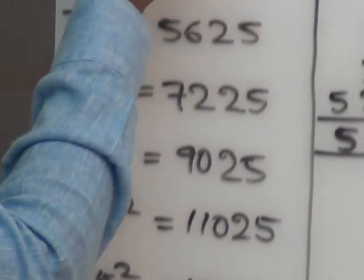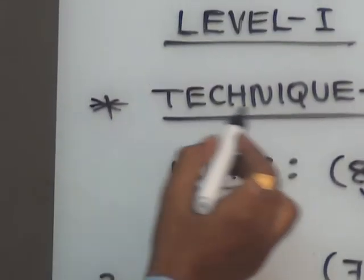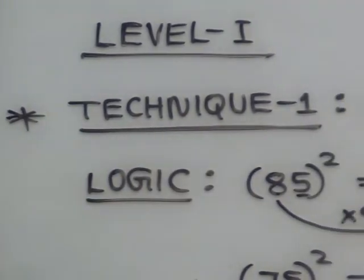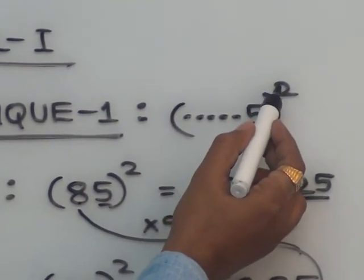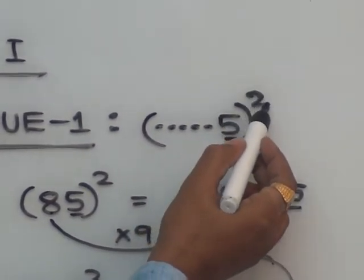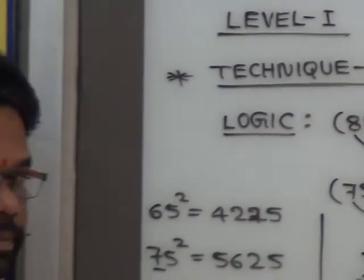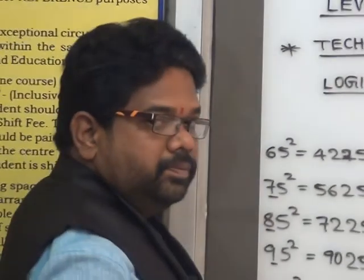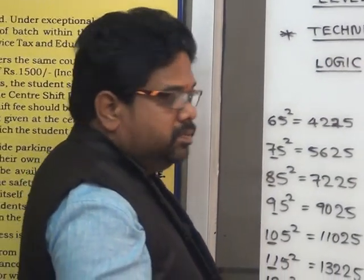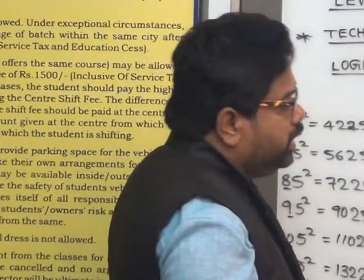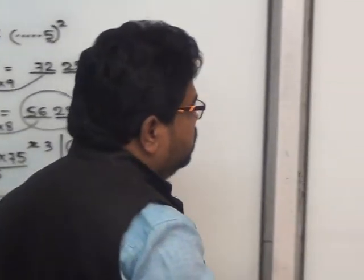Yekadha Technique 1 — enthi simple ka — mana complete hai po yandha. So units place 5 undi, remaining digit 7 kuda — so square yela chayayali. Technique 1 — all of you understand. Now Technique 2.